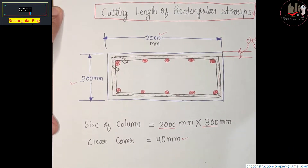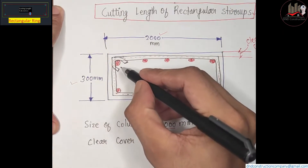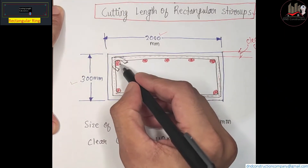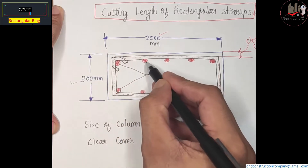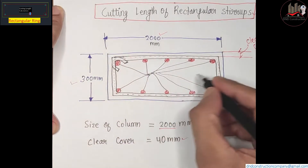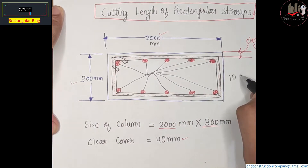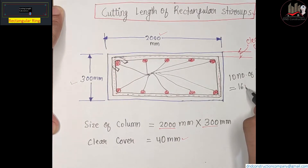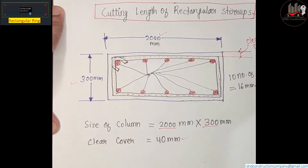As you can see, these are the vertical bars of the column — 10 numbers of vertical bars. Suppose we are taking 16 mm diameter bars, with 10 mm diameter for the stirrup ring.